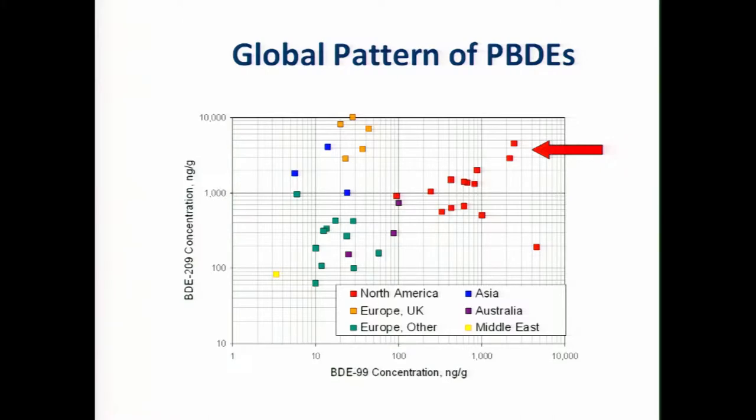This slide basically just puts our results in context with the rest of the world. As best we could, we tried to find every study that had reported levels of PBDEs in dust and had reported at least these two major congeners of PBDEs, which are BDE-99 on the horizontal axis and BDE-209 on the vertical axis. These two PBDEs are used in two different mixtures, two different commercial mixtures that are applied to different commercial products. They're not generally found together in the same product, and they represent a different pattern of use. The dots here each represent one study, and it's a median concentration reported for the dust samples in that study. You can see they're color-coded by the region of the world.